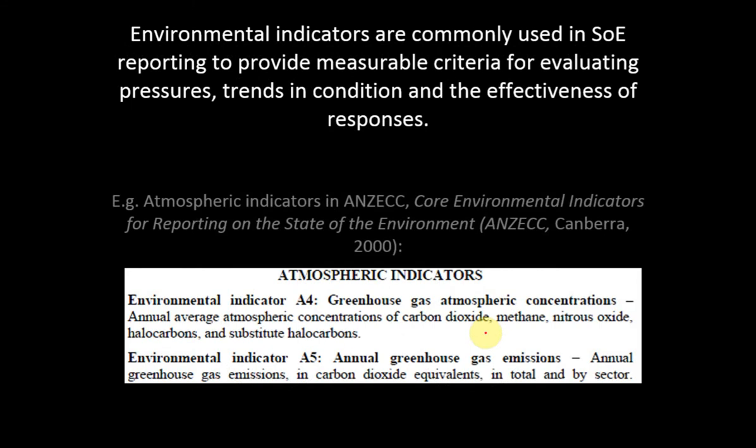Environmental indicators are often used in state of environment reporting because the world is so complex that you'll often look at a few key indicators. For greenhouse gases, we look at the level of carbon dioxide in the atmosphere — currently around 404 parts per million and continuing to rise. Mean global temperature is used as an indicator of climate change. Climate change involves a whole heap of things, but we use that measure as a single indicator.